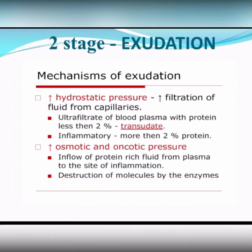Why does exudation develop? It is explained by several factors. One of them is hydrostatic pressure increase due to increased filtration of fluid from capillaries. Ultrafiltrate of blood plasma with protein less than 2% belongs to transudate; inflammatory fluid with more than 2% protein will be exudate. Also, one of the mechanisms of exudation is increase in osmotic and oncotic pressure.